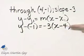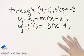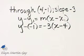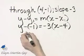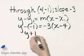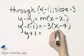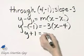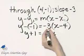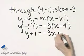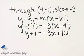We now have an equation of this line. We just need to write it in standard form. So let's simplify. That's y plus 1 equals, now I'm using the distributive property, that would be negative 3x and negative 3 times negative 4, that's positive 12, so I'll write plus 12.